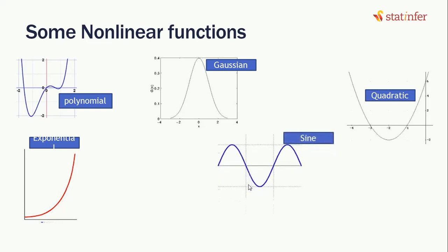Sine function fluctuates between 0, 1, and minus 1. We cannot use it because it's not stable at 0 or stable at 1. We want a function which is stable at 0 or stable at 1.